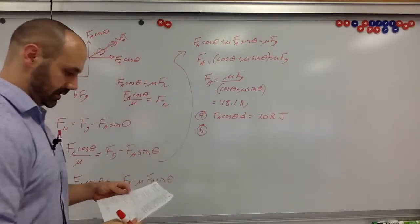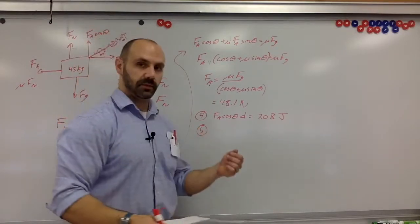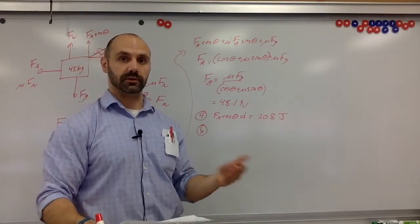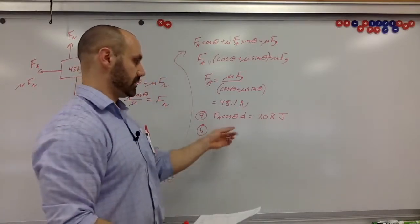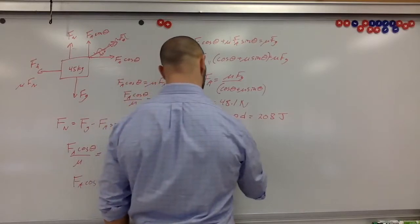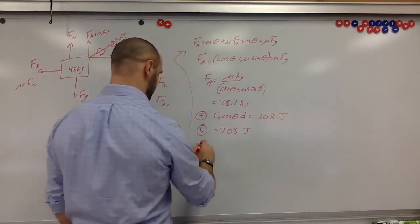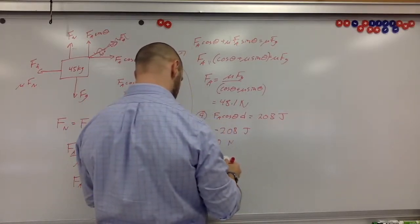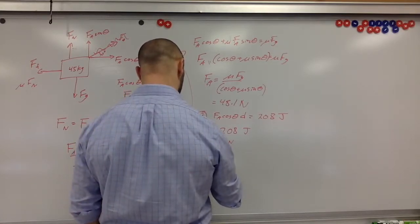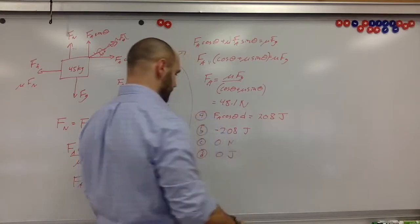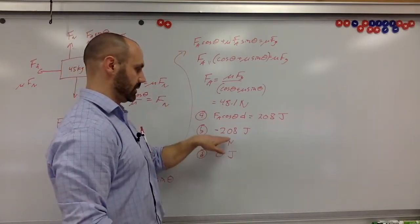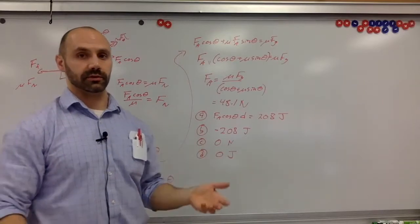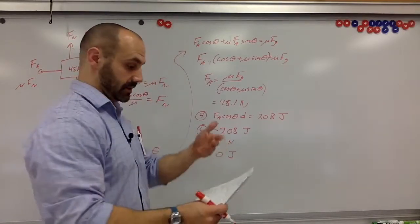Part B: how much work does friction do? Notice the sled is being pulled at constant velocity — so even though the man did 208 J of work, the kinetic energy hasn't increased at all. That means friction has done the same magnitude of work: −208 joules. Part C: net force on the sled is zero newtons. Part D: net work done is zero joules — the work by friction and work by the man add up to zero, which also corresponds to zero change in kinetic energy.